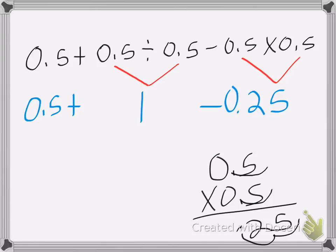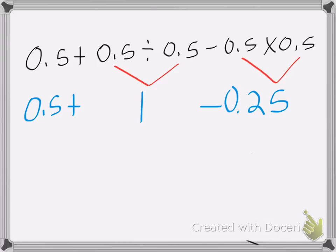So now I have 0.5 plus 1 minus 0.25. Now I'm going to add and subtract from left to right. So I'm going to do 0.5 plus 1. So I end up with 1.5 minus 0.25.